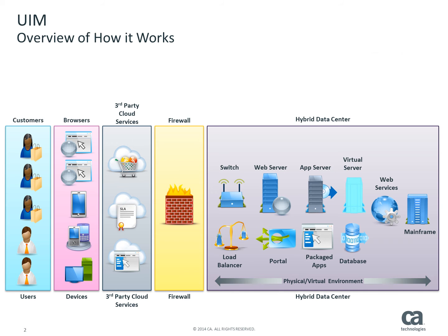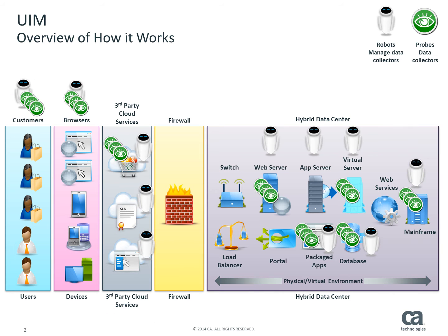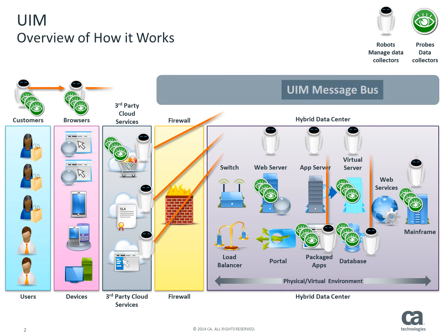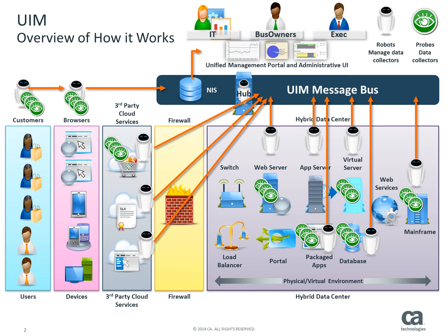To begin, the data collector managers called robots, and data collectors called probes, are provisioned to devices so they can collect, store, and transfer performance and availability data via a message bus to the data aggregators. These are special robots called hubs that store some of the data in the information store, or NIS, and then send it on to the UIM portal and reports environment.